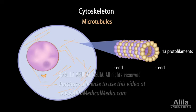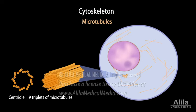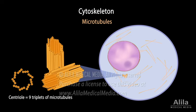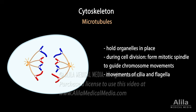Microtubules are large tubes of 13 protofilaments, each being a long chain of tubulin dimers. A centriole is a short cylinder of 9 triplets of microtubules. A cell typically has two centrioles lying perpendicular to each other, forming a structure called the centrosome, which serves as a microtubule organizing center from which microtubules grow out into the cytoplasm. In non-dividing cells, microtubule networks hold organelles in place; during cell division, they form the mitotic spindle that guides chromosome movements. Microtubules are also responsible for the movements of cilia and flagella.